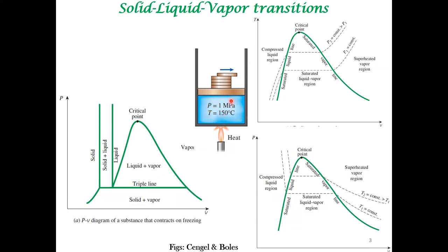Instead of thinking about a liquid, you can think about a solid, and you're decreasing pressure. The analogy between the solid-related and liquid-related regions is strong. The key notion is that a solid is a phase with very low specific volume compared to vapor, or lesser specific volume compared to liquid. Most solids obey this notion of the solid phase having lesser specific volume — or greater density — compared to a liquid.